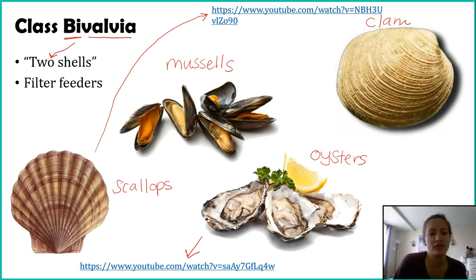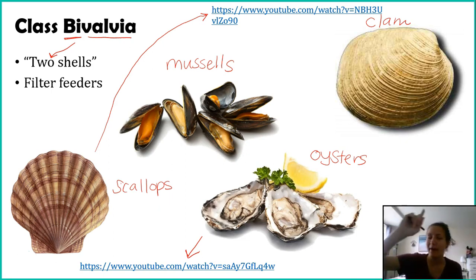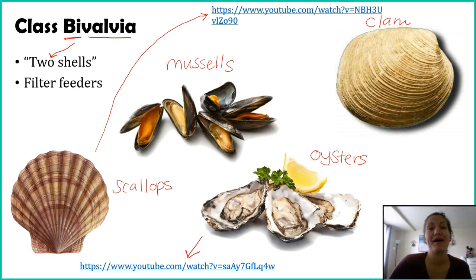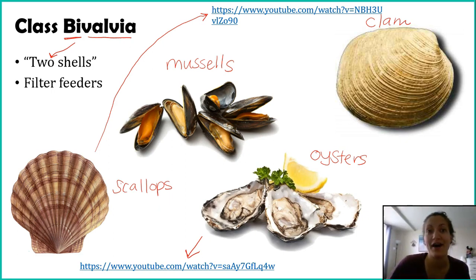So oysters have an incredibly important ecosystem service through filtering the water. This makes it so other organisms can see, and we as humans appreciate this because it means cleaner water for us to drink, swim in, and fish in. Go ahead and pause here, there is a video popping up — go watch that and then come back. That was class Bivalvia. We focused a lot on oysters, but all of these species we as humans rely on — you can buy them in the store or find them in restaurant dishes — so our economy really relies on bivalves.